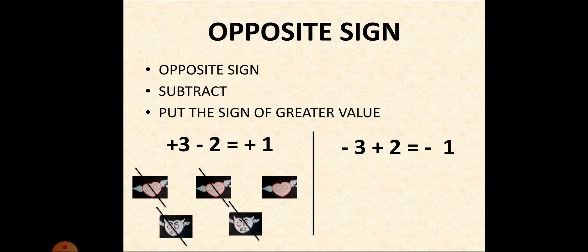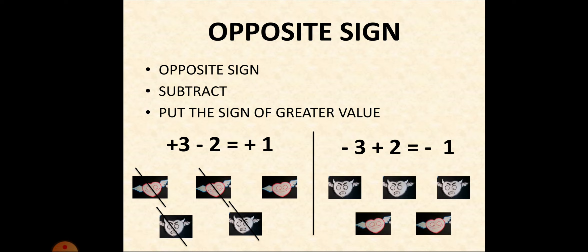Next, minus three plus two: three negatives and two positives. Here negatives are more, so in our answer we'll also get a negative. Three minus two gives one, so the answer is minus one. Here we can see three villains and two heroes — a villain gets cancelled with a hero. Two heroes and two villains cancel out, and remaining is only one villain. In place of one villain, we get minus one. I repeat: opposite sign — we subtract and put the bigger sign, whose power is more.